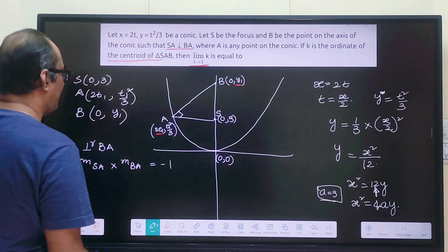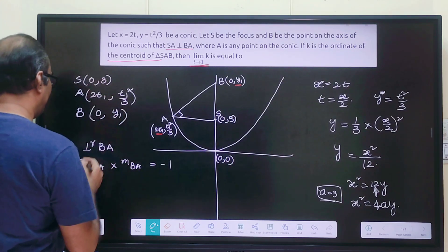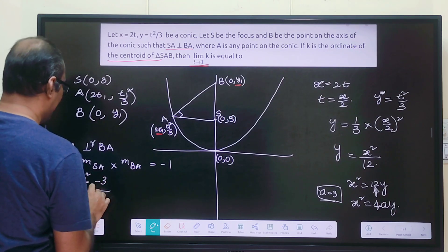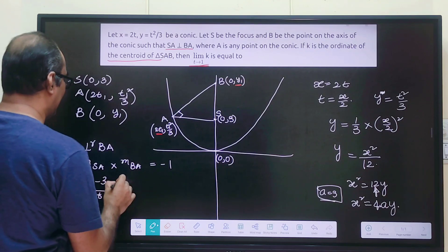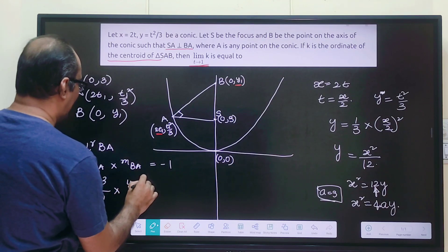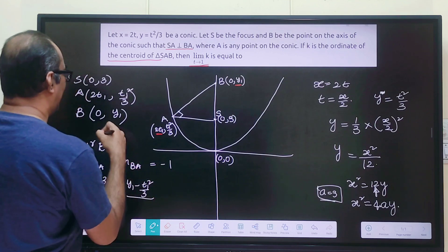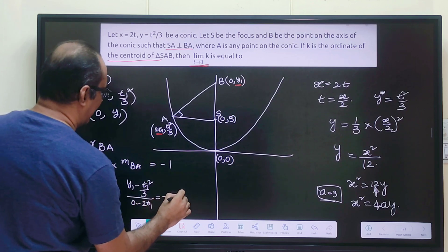SA perpendicular to BA means slope of SA times slope of BA equals -1. What is slope of SA? We apply (y₂-y₁)/(x₂-x₁) formula. So it will be (t₁²/3 - 3)/(2t₁) multiply with slope of BA that will be (y₁ - t₁²/3)/(-2t₁) equals -1.